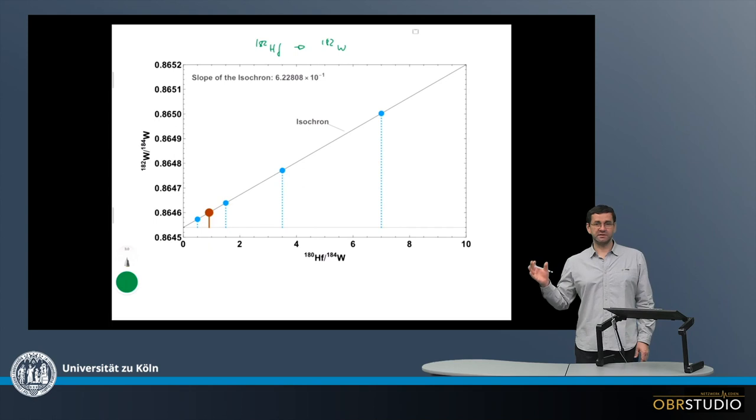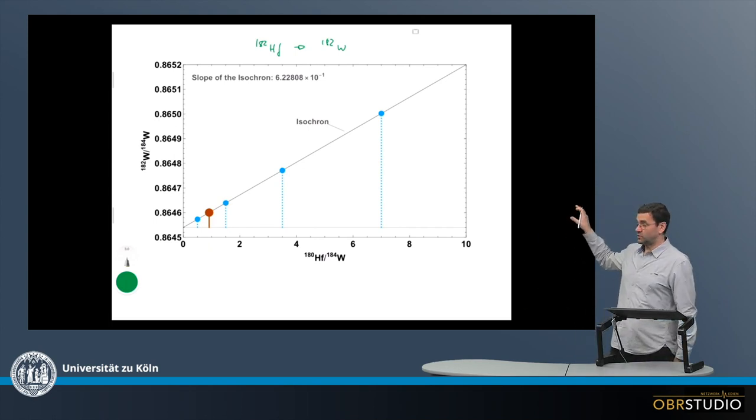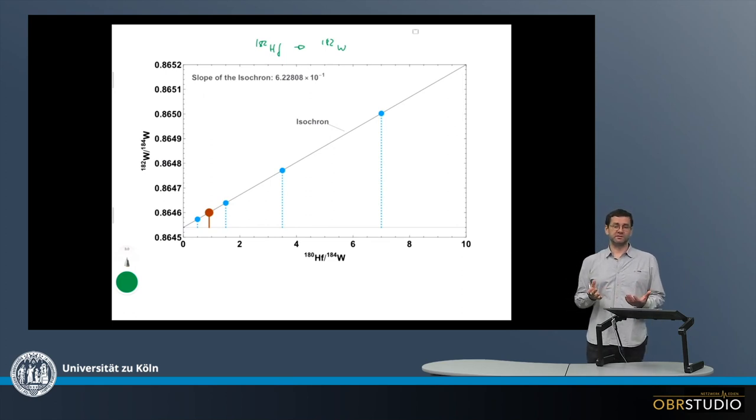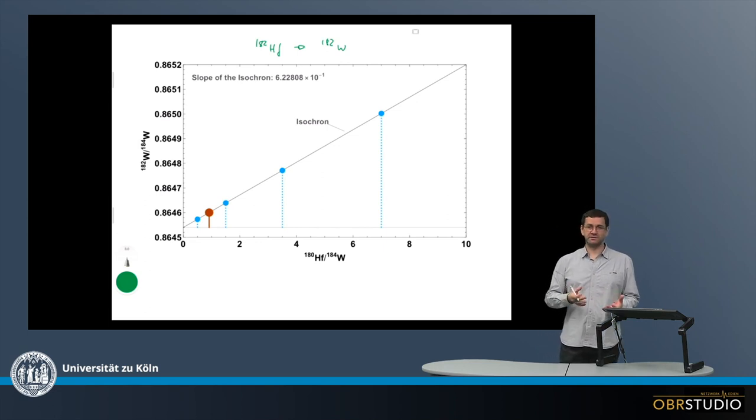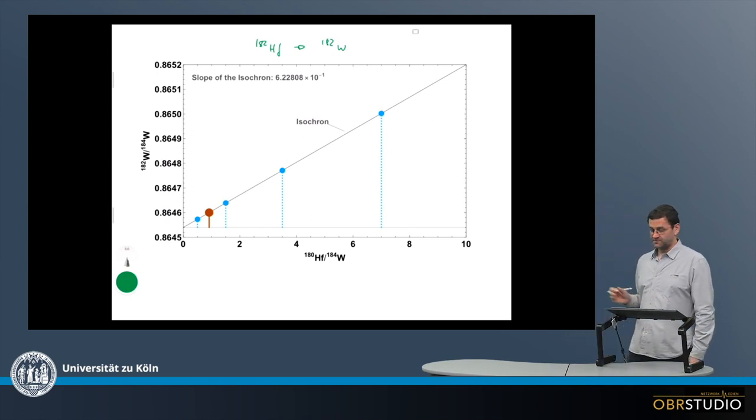And it's important to repeat this because the 182 Hafnium is not represented on this plot at all. The reason for this is that the 182 Hafnium, because it is a short-lived system, is now extinct. So there's no more 182 Hafnium. And if there's no more 182 Hafnium, we can't measure it, and we can't plot it here.